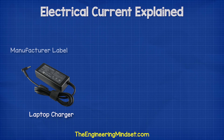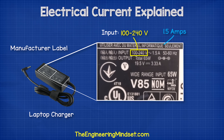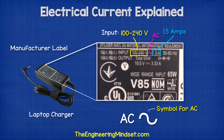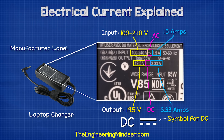If you look on the plugs of your electrical devices, you should find labels from the manufacturers which tell you what the product is designed to handle. For example, this laptop charger tells us that for the device to work, it needs an input of between 100 and 240 volts and 1.5 amps of AC or alternating current, which is represented by this symbol here. The charger will then convert this to give an output of around 19.5 volts and 3.33 amps of DC or direct current, which is represented by this symbol.